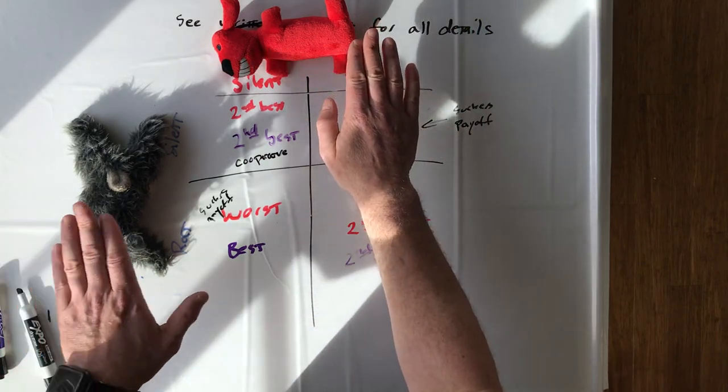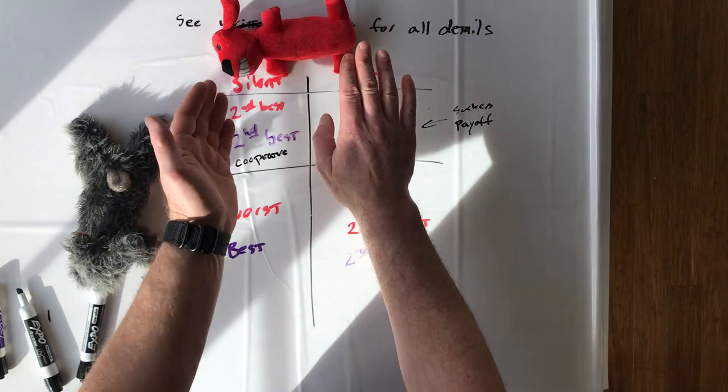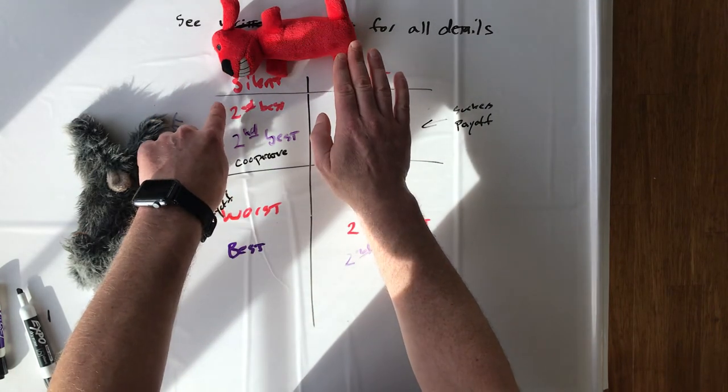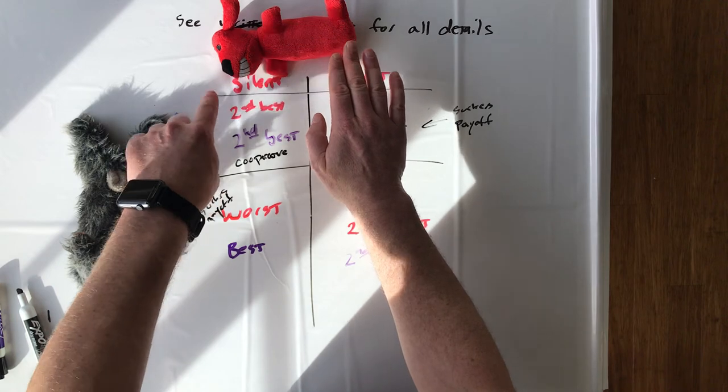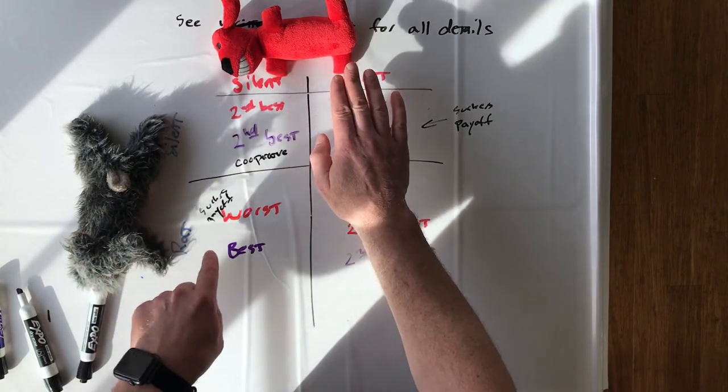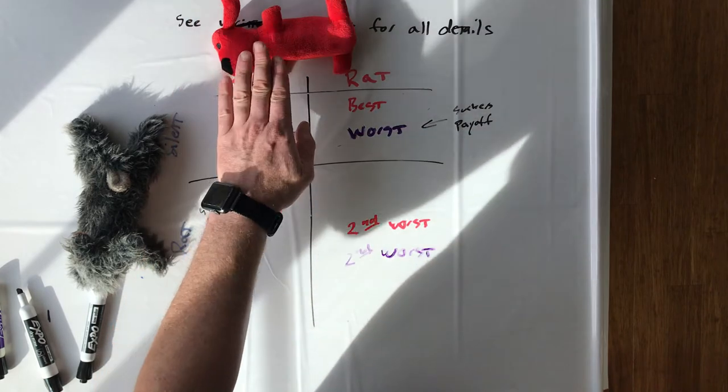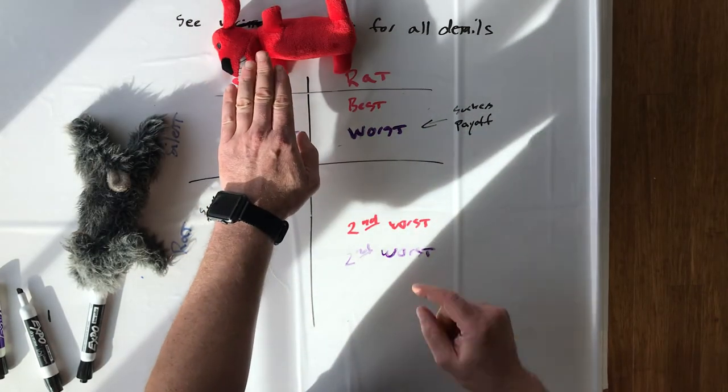If you're Rabbit, imagine that Red Dog is going to keep her mouth shut. What should you do? Well, if she's going to keep her mouth shut, you're choosing between second best and best, so you should do the thing that gets you the best, so you should rat.